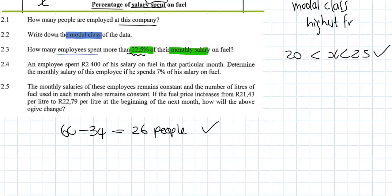Question 2.4: An employee spent R2,400 of his salary on fuel in that particular month. Determine the monthly salary of this employee if he spends 7% of his salary on fuel. So we need to work with percentages. We know that he spent R2,400, which is the amount spent on fuel.